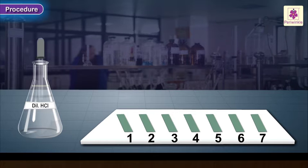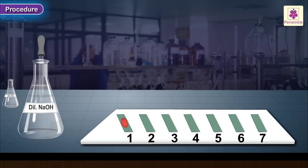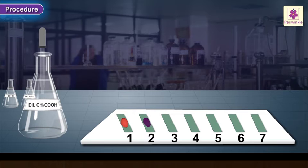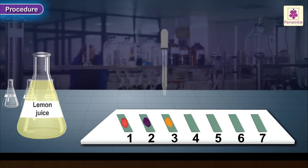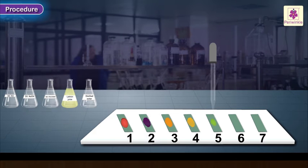Use a clean dropper to place two drops of the first test sample, dilute hydrochloric acid, on the first piece of the pH paper. Use another dropper and place two drops of the second test sample, dilute sodium hydroxide solution, on the second piece of the pH paper. In the same manner, place two drops of each solution separately on the pH paper strip of the corresponding number.